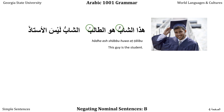However, if I use the verb Leysa — 'Ashabu Leysa al-Ustadha,' the guy isn't the professor — I keep the Mubtada in the Marfu case by default, but because I've used the verb Leysa, I mark al-Ustadha not with a single Dhamma but with a single Fatha. This is the indication that it's in what's called the Mansoub, or accusative, case.